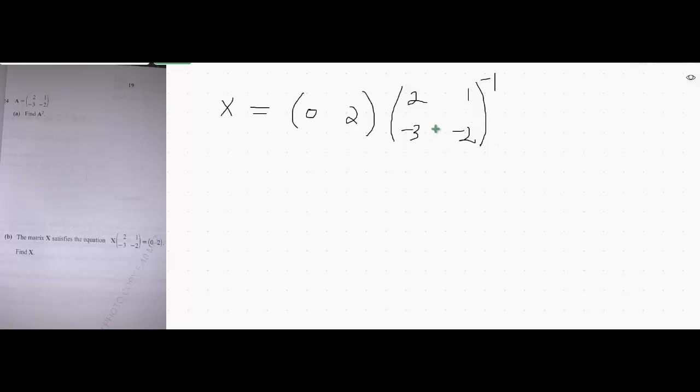So now we have to find first the inverse of this matrix. To find the inverse of this matrix, it is 1 over determinant of this and then multiply that with adjoint. Adjoint means you have to switch these values, minus 2, and 2.